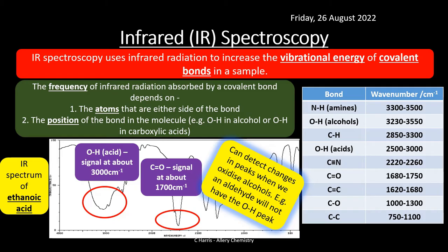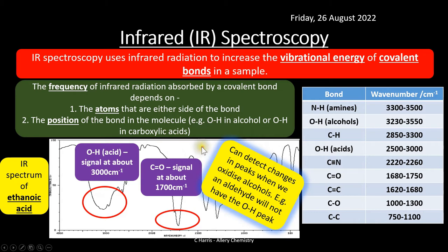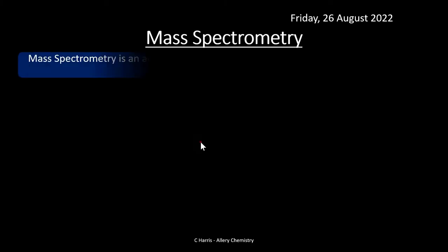Infrared is really there to detect functional groups primarily. It can also be used to identify a compound outright using the fingerprint region, but a computer would do that — matching the spectrum against a library. You're not expected to identify compounds by eye from the fingerprint region. That's really all you need to know for infrared. The rest is mass spectrometry.